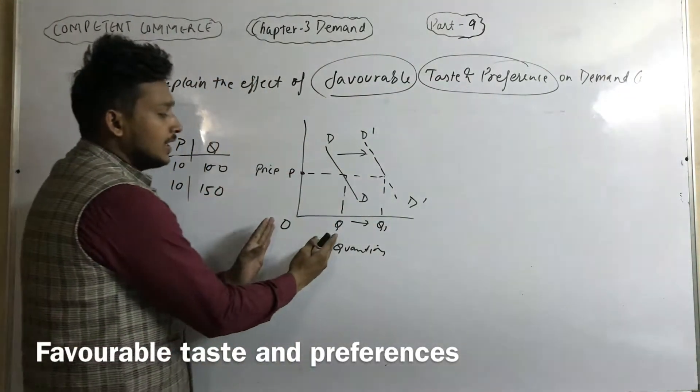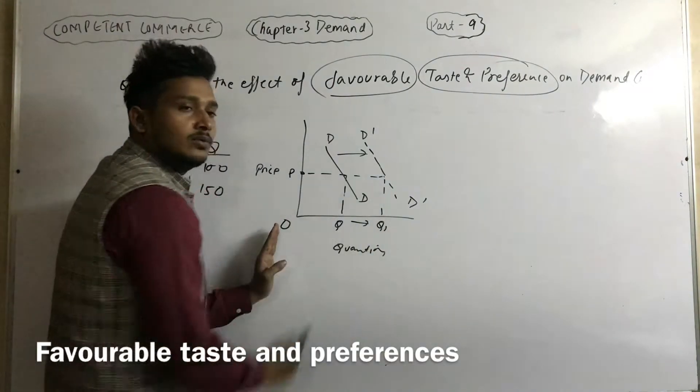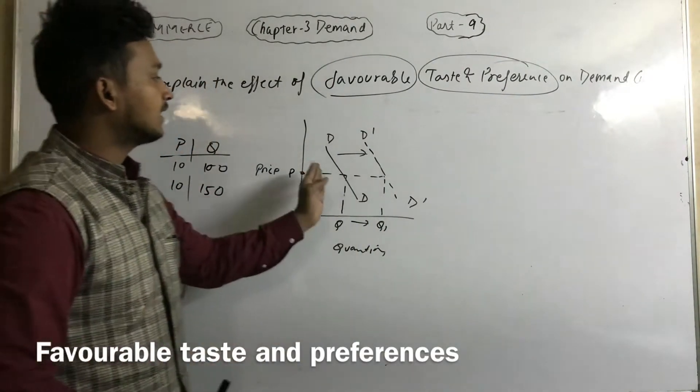Demand of the given commodity increases from OQ to OQ1. As a result of it, demand curve shifts rightward from DD to D dash D dash.